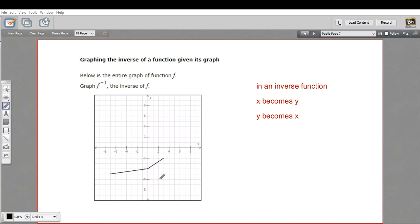In this problem we have the graph of a function and we're being asked to graph its inverse. The thing to remember about an inverse is that the x becomes the y and the y becomes the x. You just swap those x and y for each of the coordinates in the graph of your original function to get the inverse.